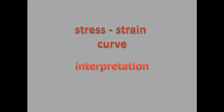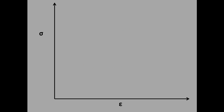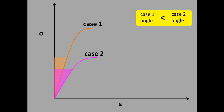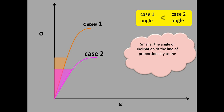Hello friends, today we will see stress-strain curve interpretation. Observe the angle suspended by the line of proportionality with the vertical line. Here in case 1 and in case 2, this is the angle in case 1 and this is the angle in case 2. Observe that case 1 angle is less than case 2 angle.